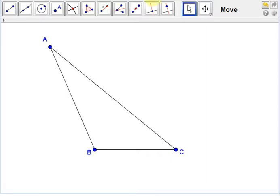In other words, given a triangle ABC, if the angle at B is greater than the angle at C, then the side opposite angle B, that is the side AC, will be greater than the side opposite angle C, that is the side AB.